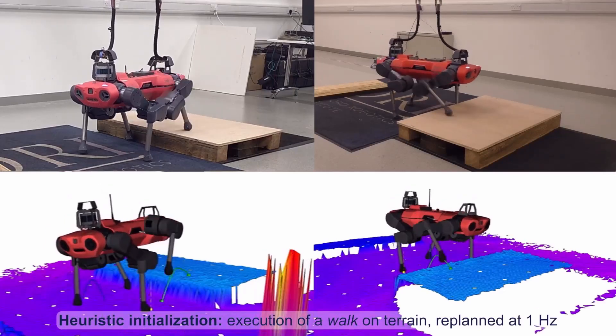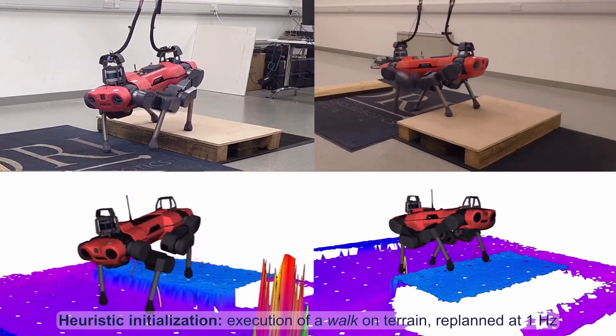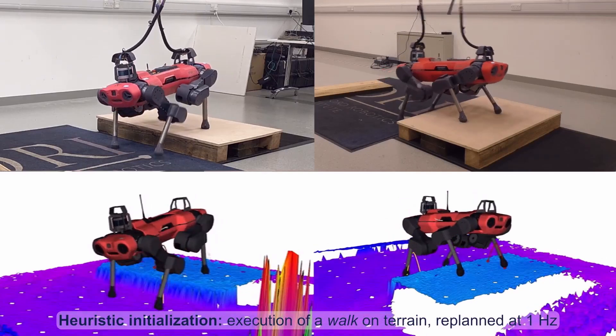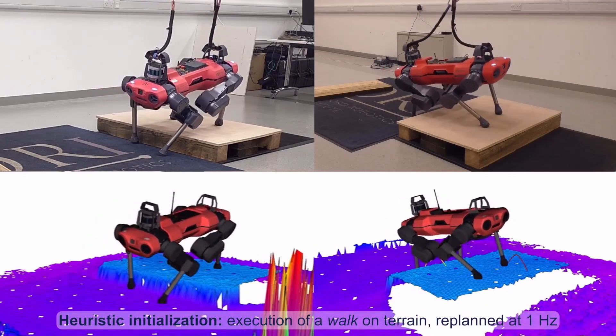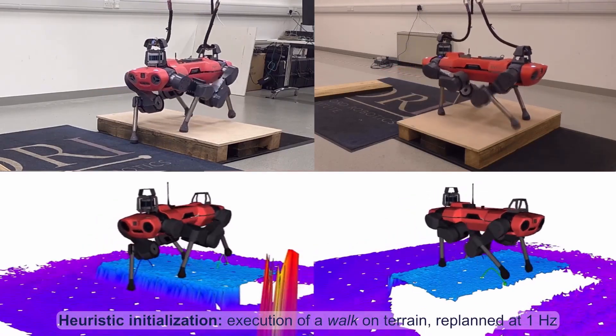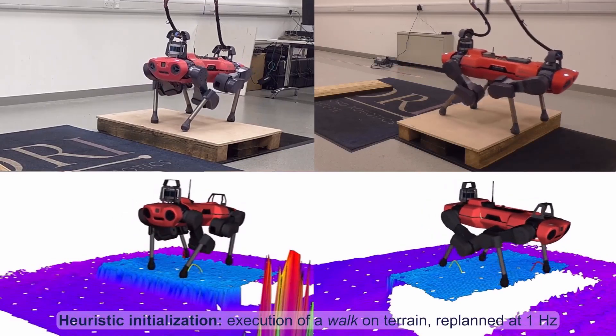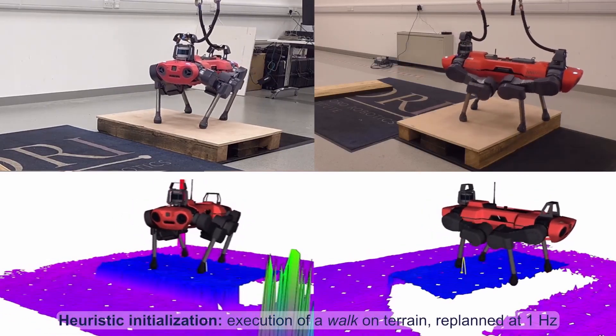Informed by perception, we are able to traverse uneven terrain. The optimizer places footholds on the elevation map while using the cost map to keep them away from obstacles such as edges. The swing motion accounts for each step height, reducing the risk of collision between the shins and the terrain.